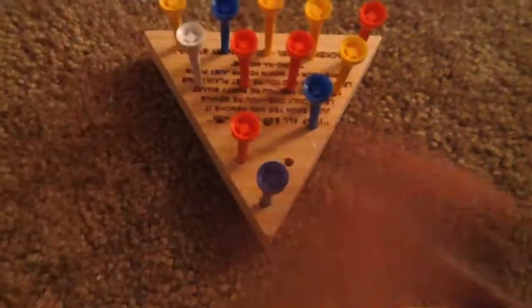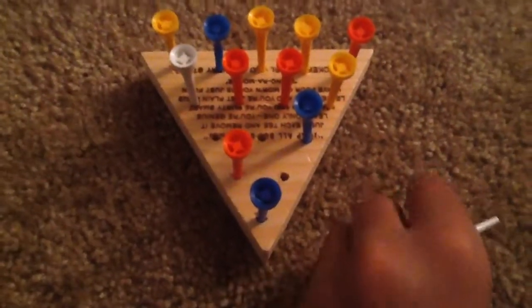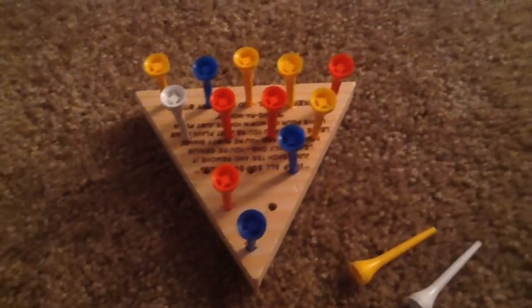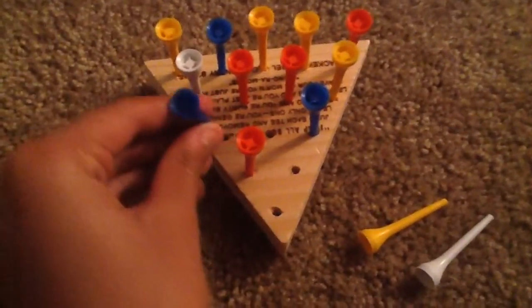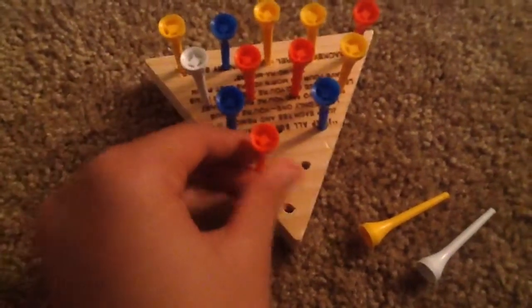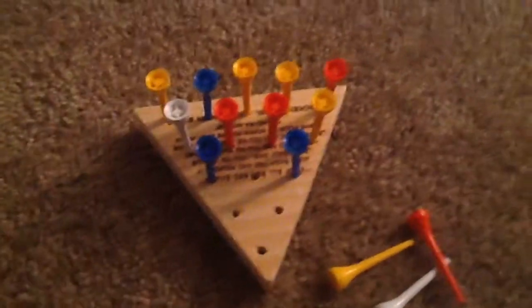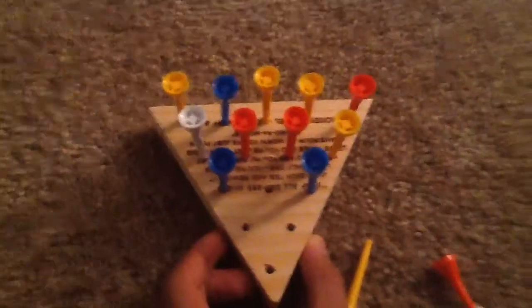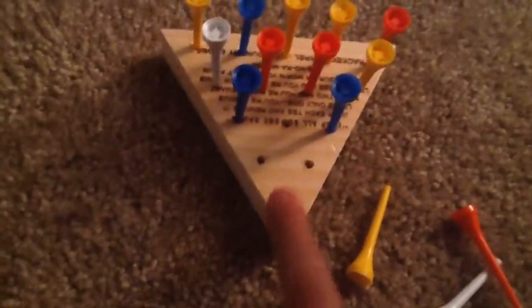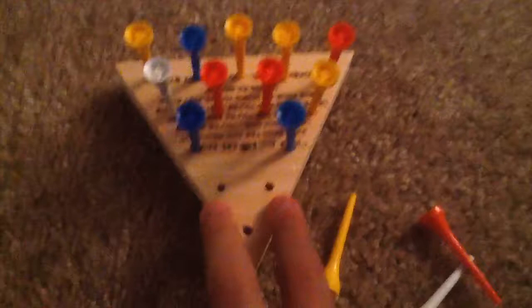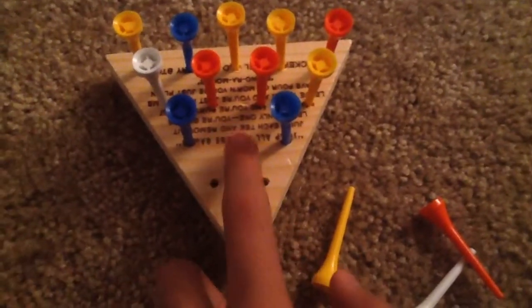And the colors don't even matter, they just there, so it won't be boring or something. Okay, now you should have a board like this. The point of this method is to clear the front and the second rows in the middle.